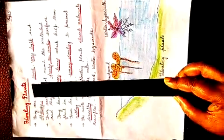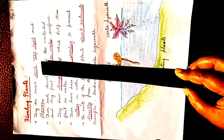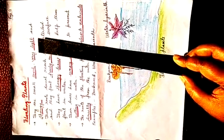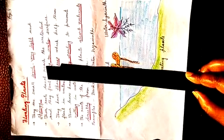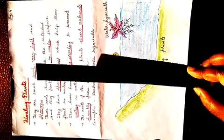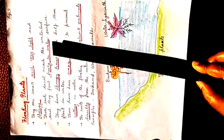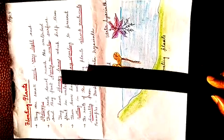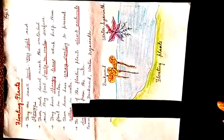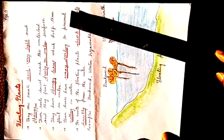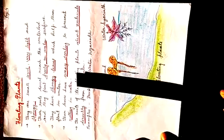Next is floating plants. They are small in size, very light and spongy. Their roots do not reach the water bed and they hold their leaves on the water surface. They have spongy leaves which help them float in water. Their leaves have a waxy coating to prevent rotting in water.